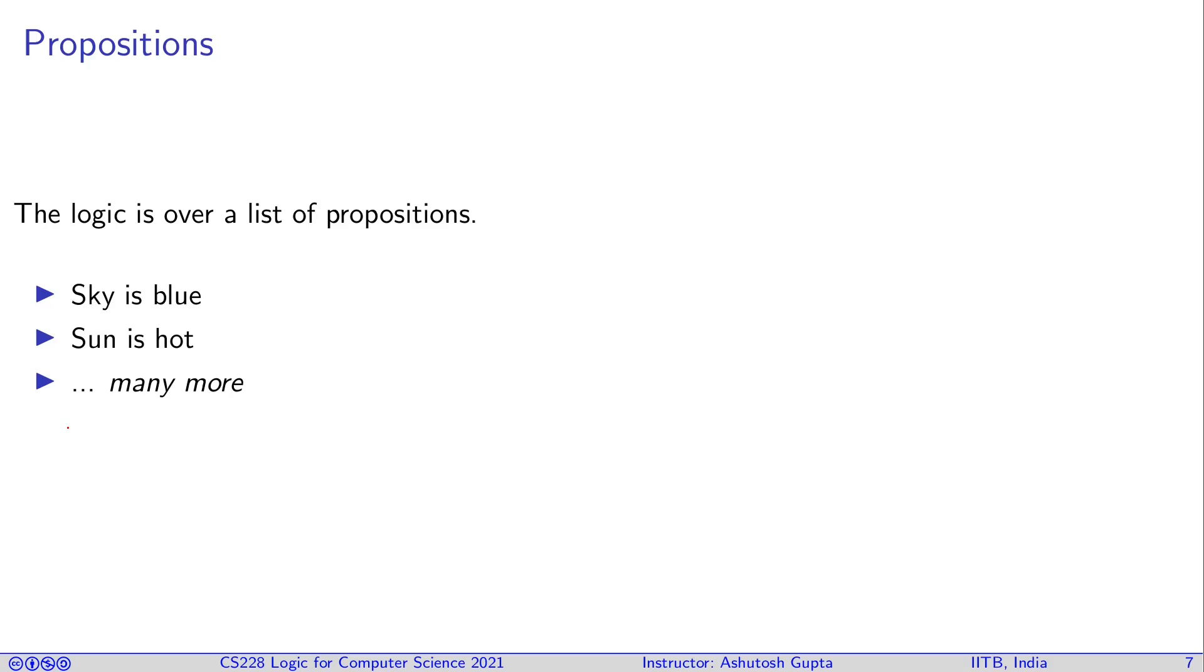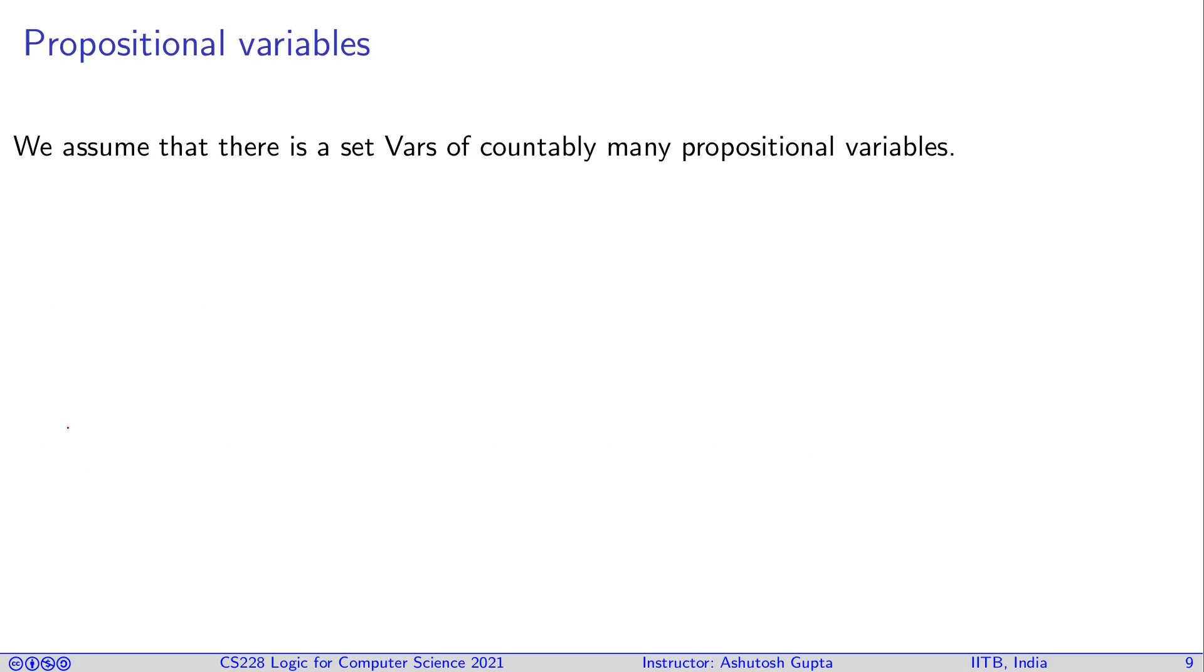First thing, logic is over a list of propositions. In any context you are applying propositional logic, you have a list of statements or propositions and your argument is over those propositions. We need an a priori list of propositions, for example, sky is blue, sun is hot, or any list. We don't care what each one says and each one of them we assign a symbol. So we assume that there is a set Vars, which has countably many propositional variables, and they represent some set of statements out there.